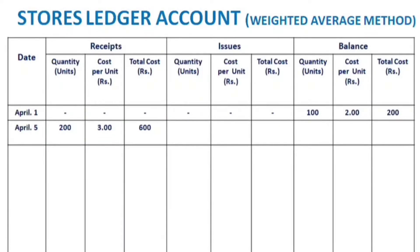For April 5th, there are no issues, so we put a dash in the issues column. The balance is now important to calculate.